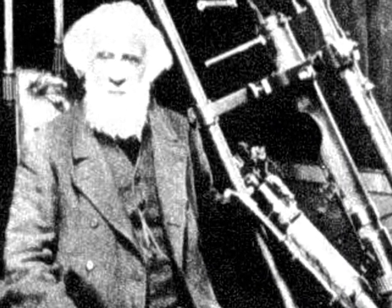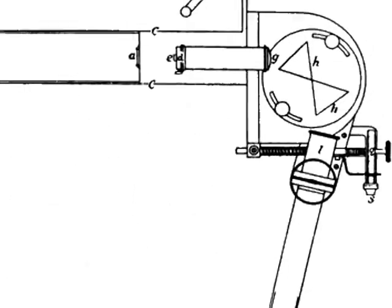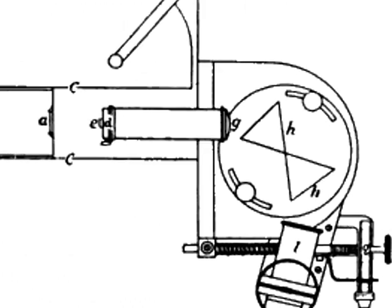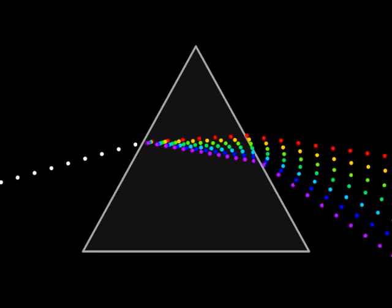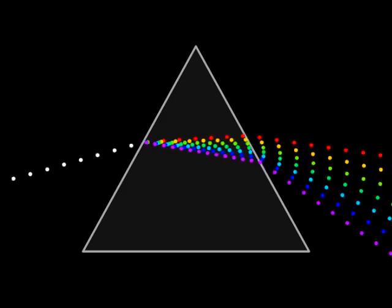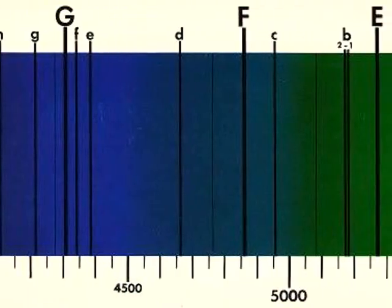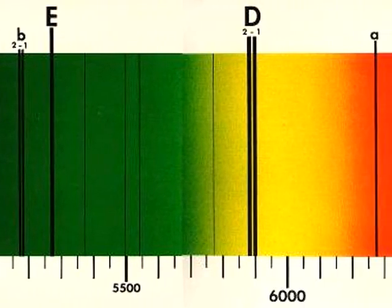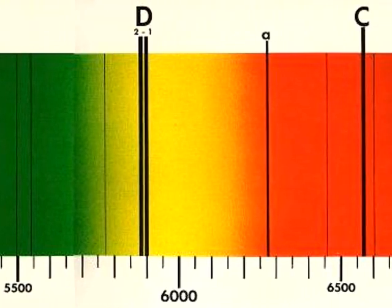Scientists built the first spectroscope to analyze the light of stars. They expected to see a continuous spectrum like sunlight. However, they saw dark absorption lines. This absorption spectrum is created when the star's atmosphere absorbs certain wavelengths of light.